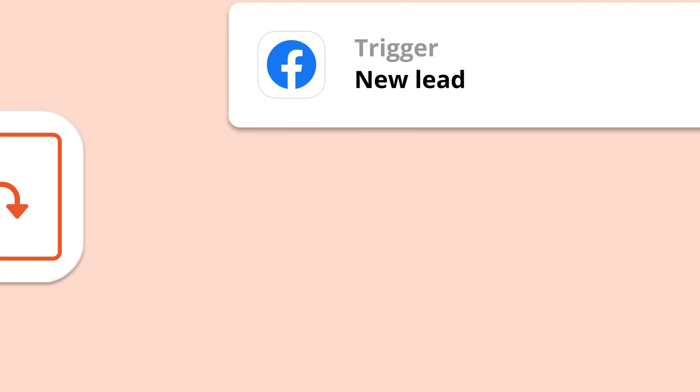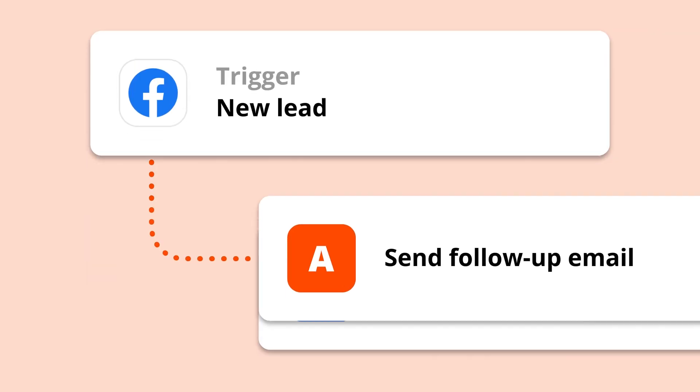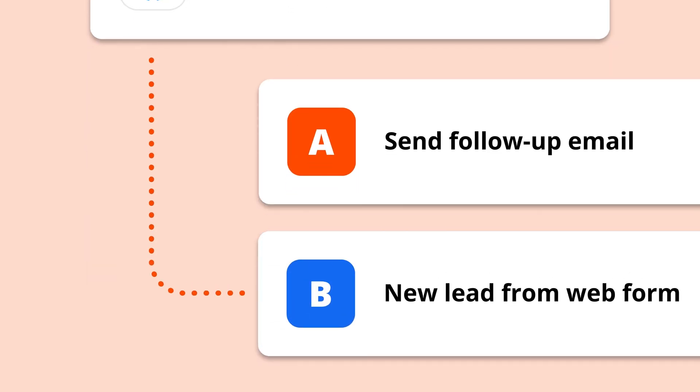Paths is a built-in Zapier tool that lets you build one Zap with multiple outcomes. Think of it a bit like a choose-your-own-adventure, but for automation. Paths use what we call conditional logic: if A happens, then do X, but if B happens, do Y instead.